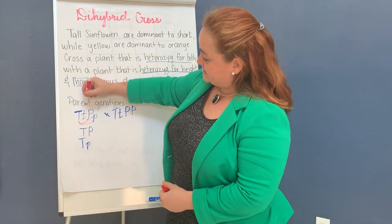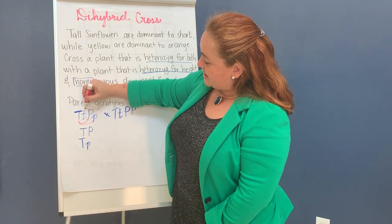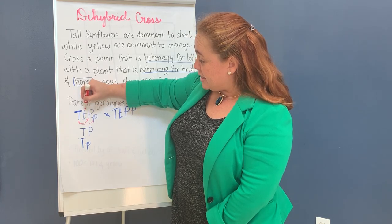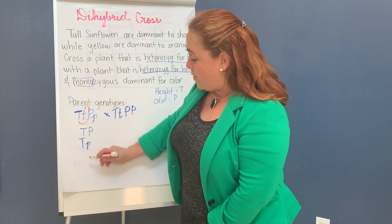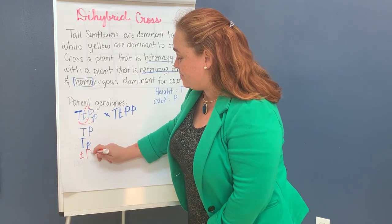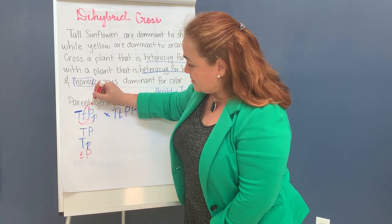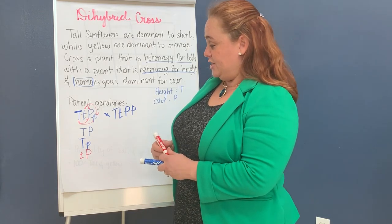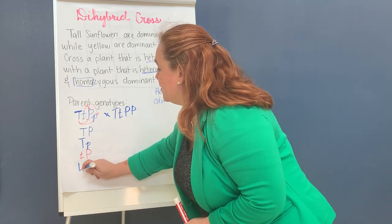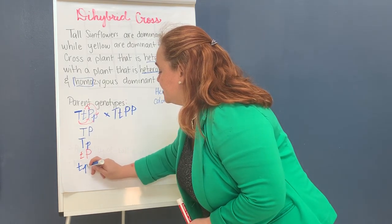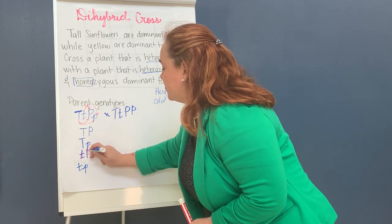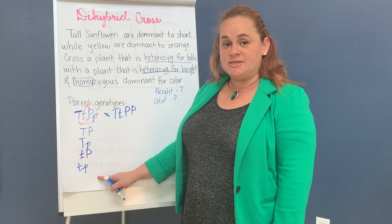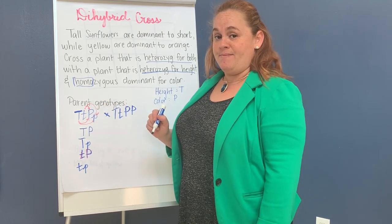Then I look at the second allele, lowercase t. It can be combined with capital P, or combined with lowercase p. So parent one gives me four different options in which those alleles can be combined.